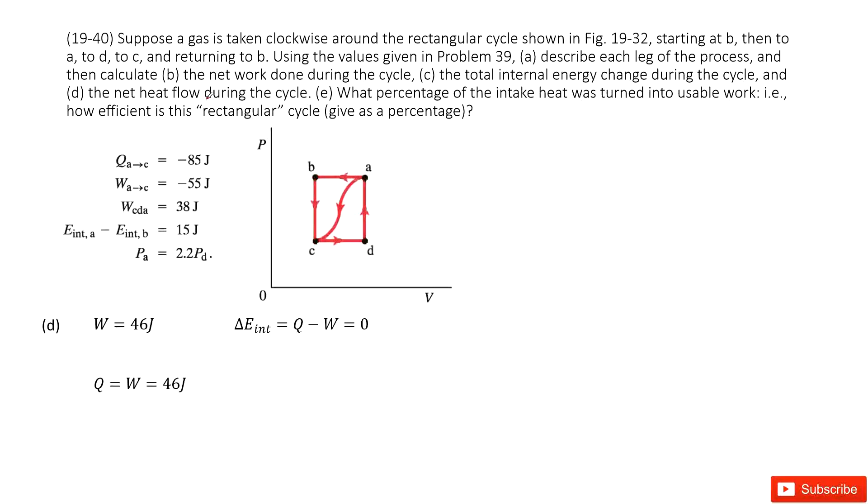And the next one asks the net heat during these cycles. As we learned, the internal energy change equals Q minus W. And we see internal energy never changes. And W is given as 46 joules. In this way, we can get Q just equals W, just equals 46 joules.